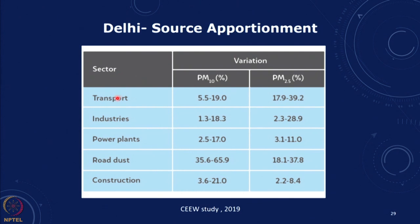Industries account for as high as 29 percent in some studies, road dust 18 to 37 percent, construction 2 to 84 percent. There is an interesting spike that has been attributed to stubble burning or biomass burning in nearby agricultural fields. Interestingly, changes in agricultural policies and water use have caused a slight shift in harvesting timing, so this stubble burning now coincides with winter and has contributed to the problem.